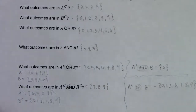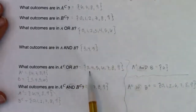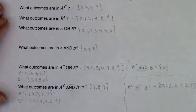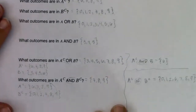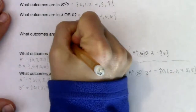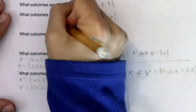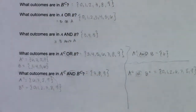Notice that any time we had an OR, we had a pretty long list — ORs tend to produce longer lists. ANDs tend to produce shorter lists. One final note: A and B is the same as B and A, and A or B is the same as B or A. The order doesn't matter — the outcome list will be the same regardless.